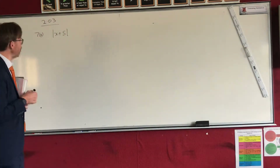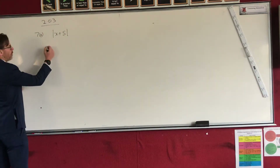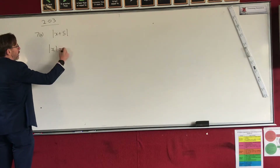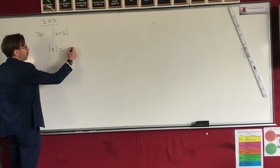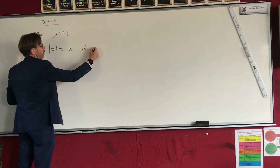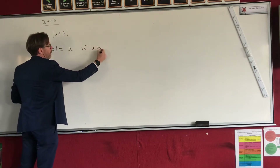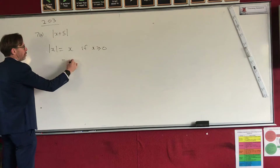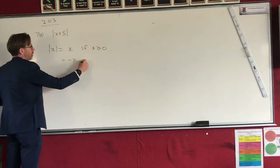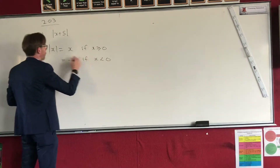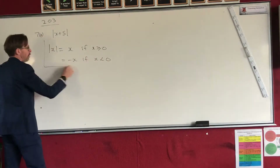Now the definition — what is the definition of absolute value? Well, the absolute value of x is equal to x if x is bigger than or equal to 0, and it's equal to minus x if x is less than 0. That is the definition.